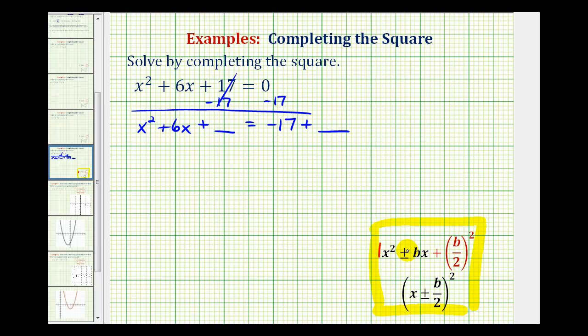Where b is the coefficient of the x term. So looking at our example, notice that b is equal to 6. So b divided by 2 squared is going to be 6 divided by 2, that's 3 squared, which is equal to 9.